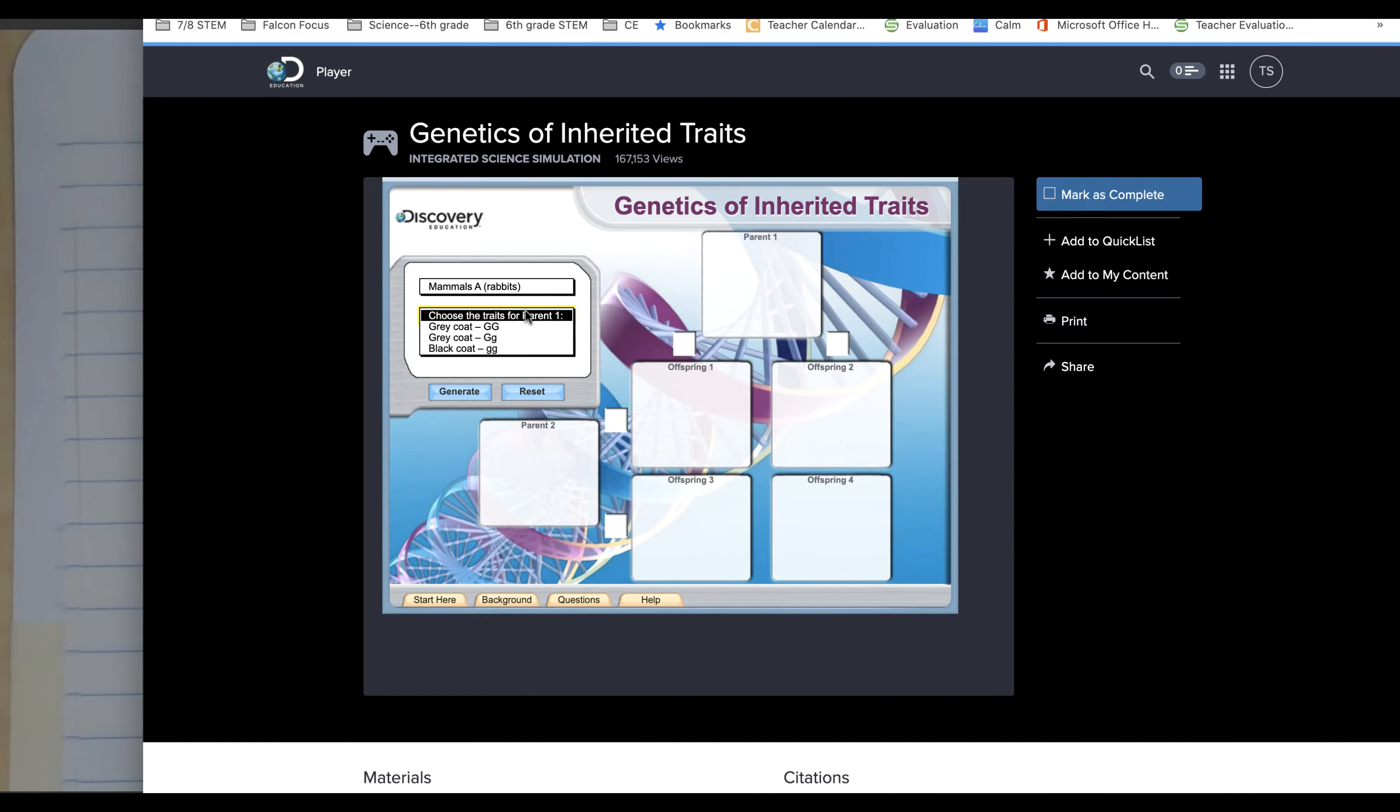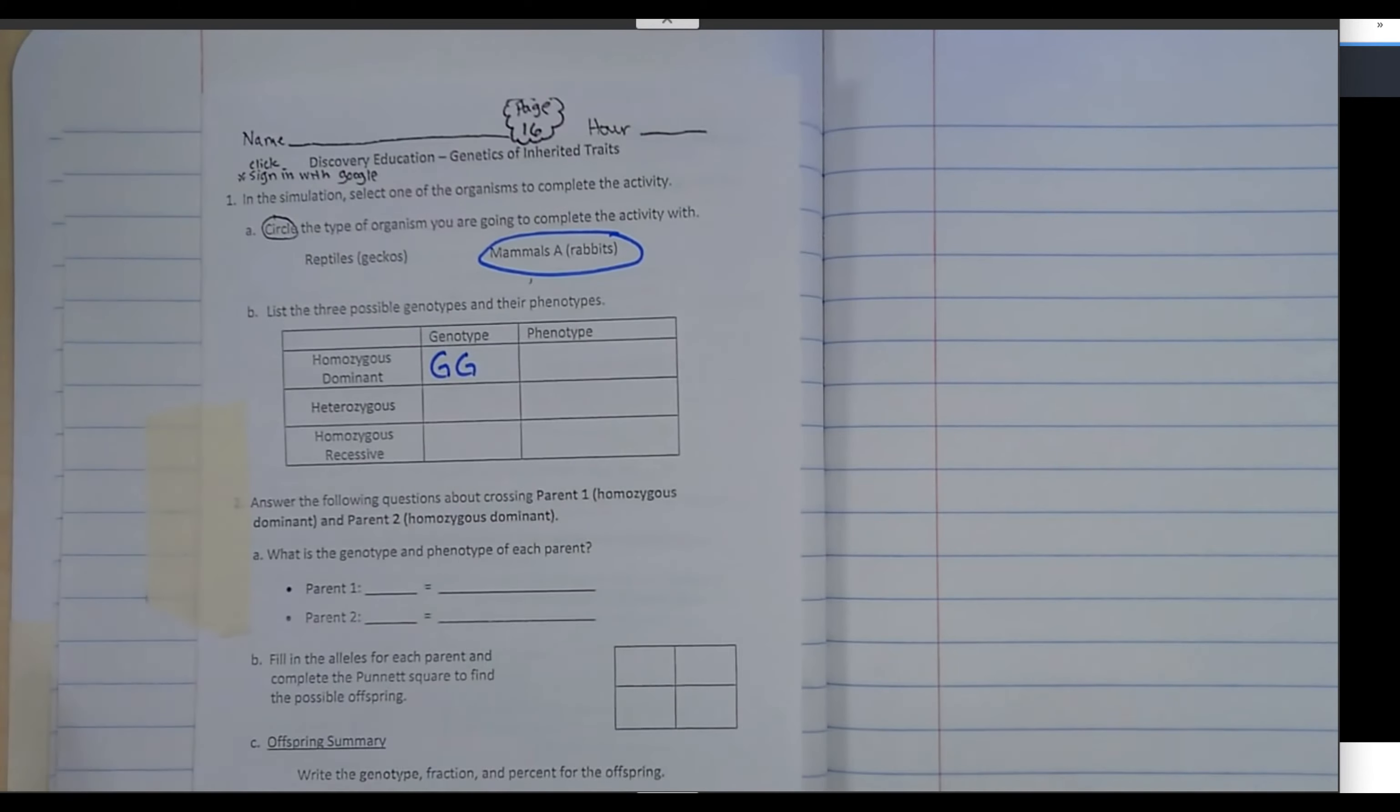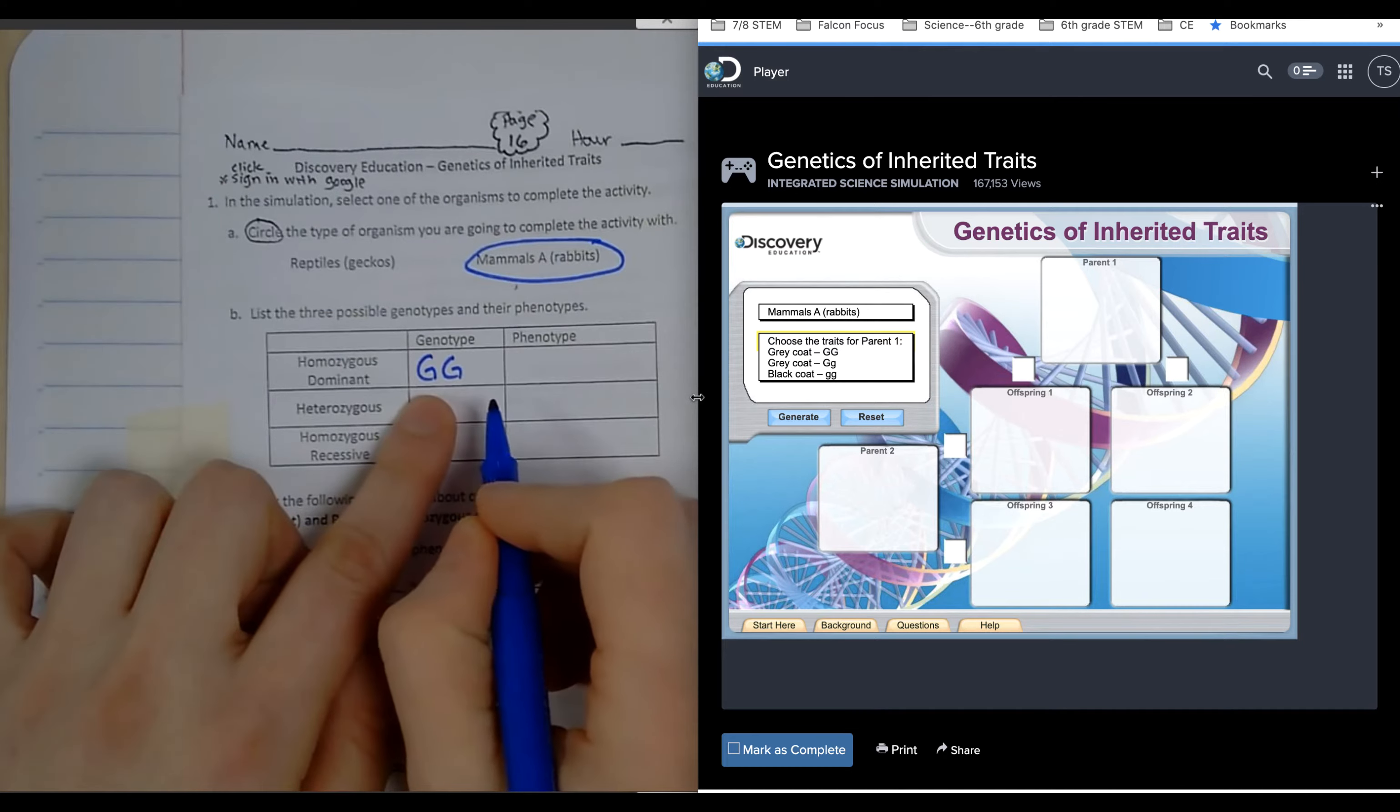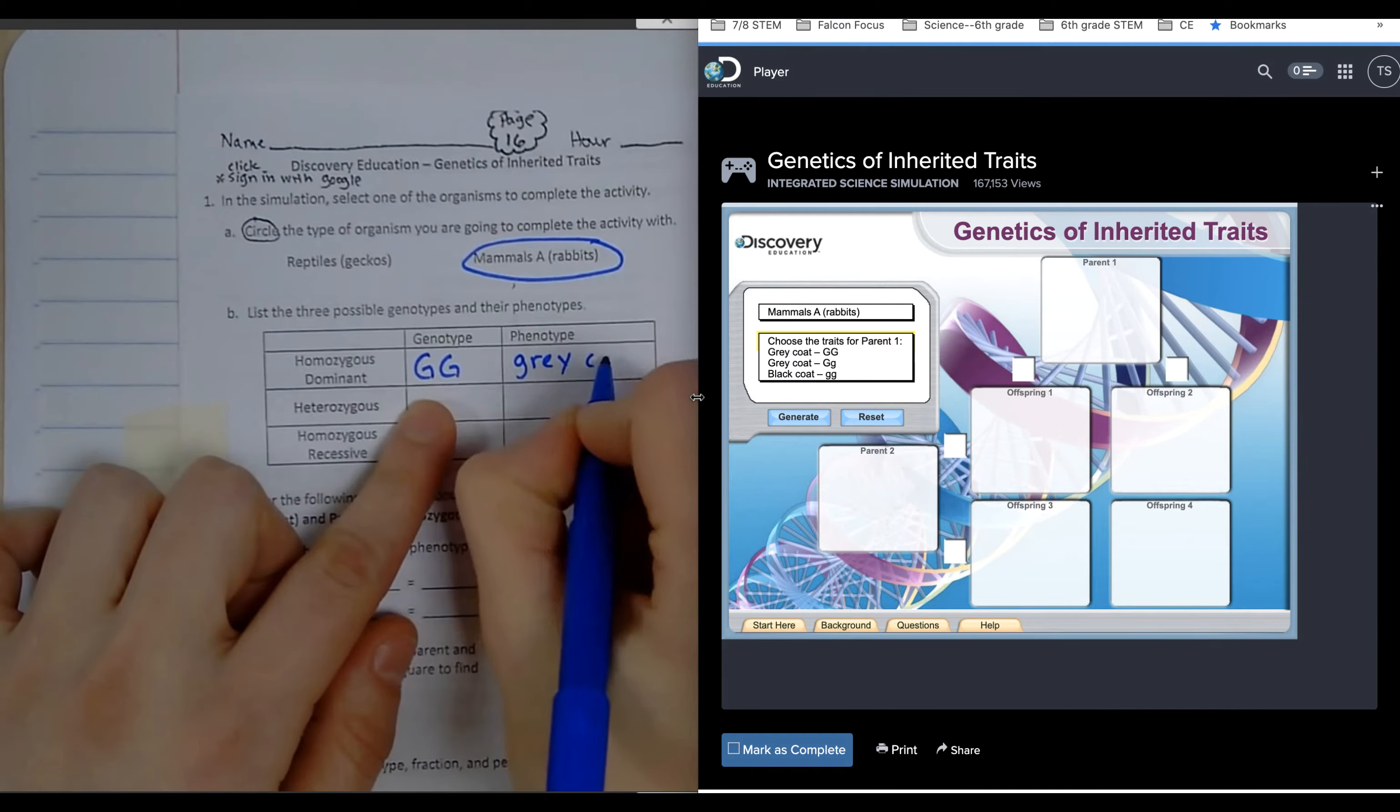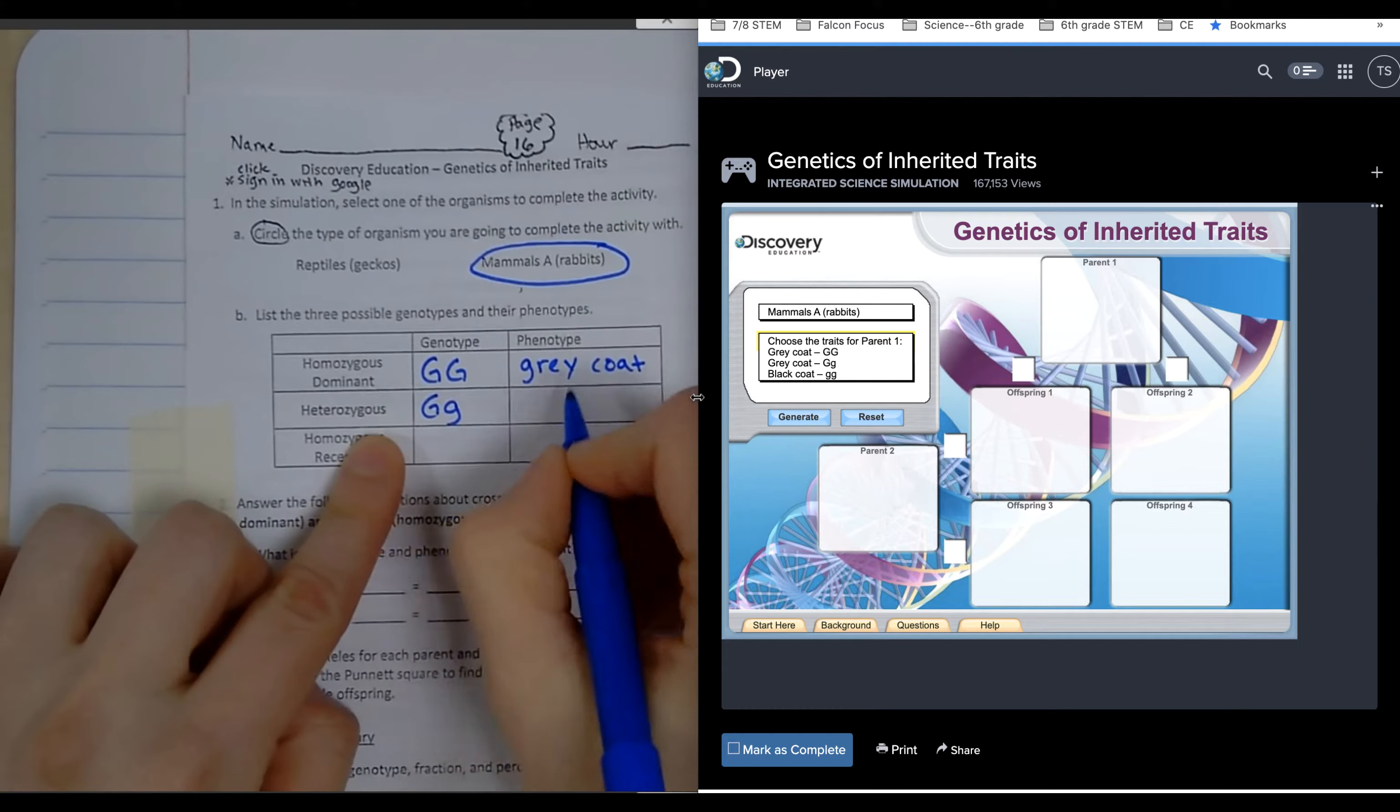I can see here that it's using the letter G. Homozygous dominant is big G big G, and big G big G means that it has a gray coat. Heterozygous shows big G little g, and that also has a gray coat.